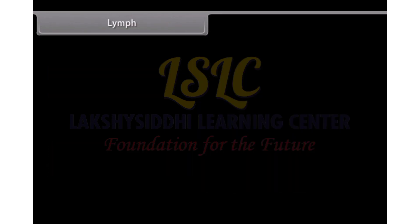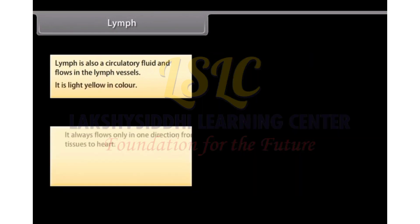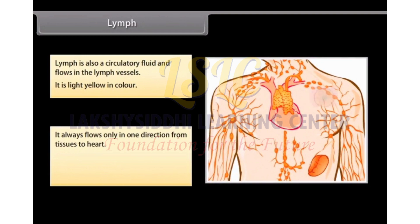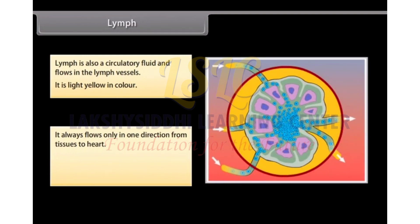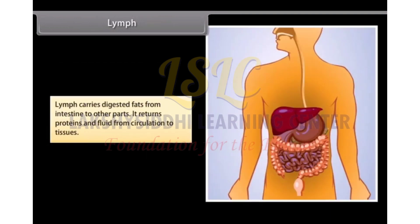Lymph is also a circulatory fluid and flows in the lymph vessels. It is light yellow in color and always flows only in one direction, from tissues to heart. Cells called lymphocytes present in lymph eat up germs and prevent the body from infections. Lymph carries digested fats from the intestine to other parts and returns proteins and fluid from circulation to tissues.